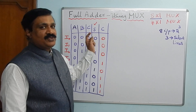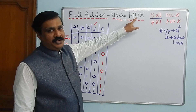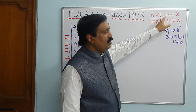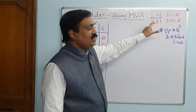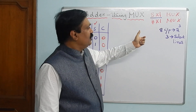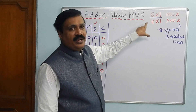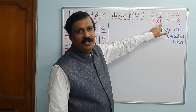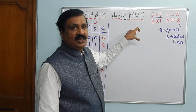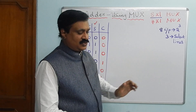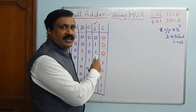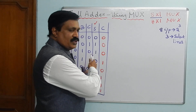Good morning. Today we are going to see full adder using multiplexer, or simply MUX. In the last class we designed a full adder using an 8×1 multiplexer — please see that video first as this is a continuation. Today we are going to use a 4×1 multiplexer, meaning we are reducing the inputs. For this we require K-map designing first.